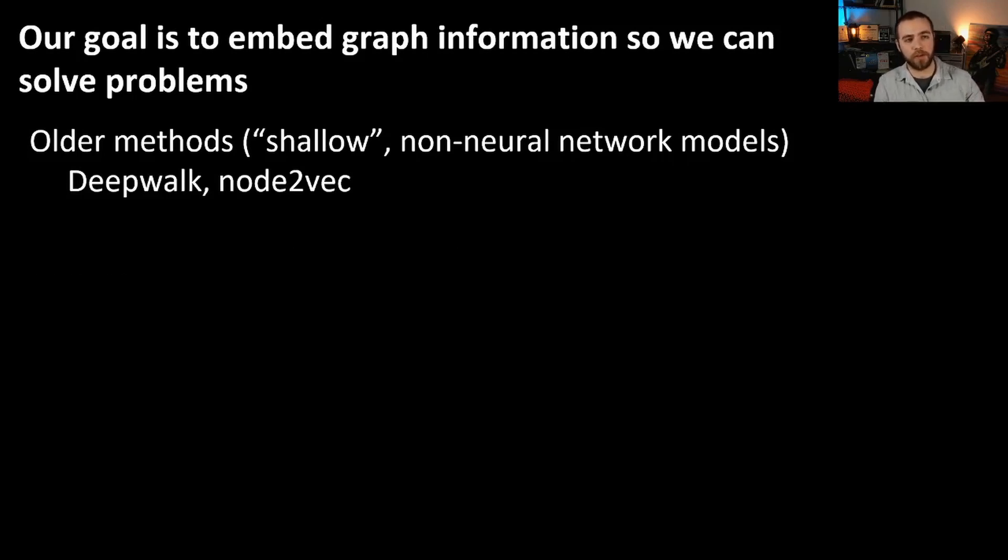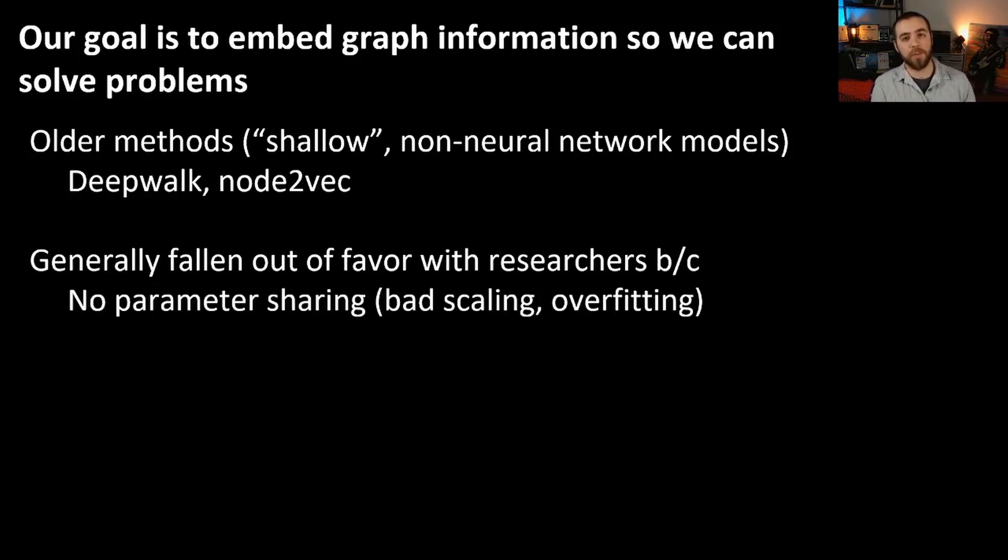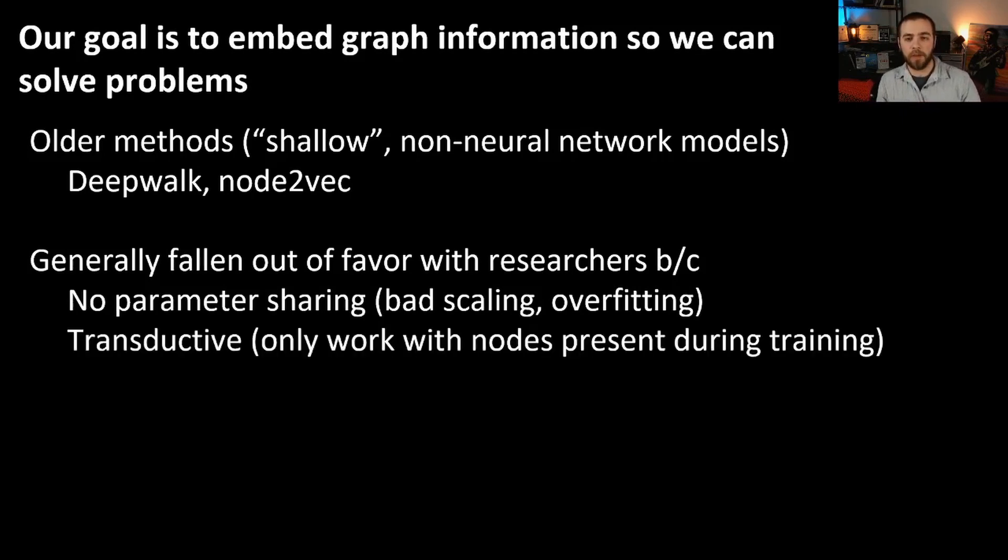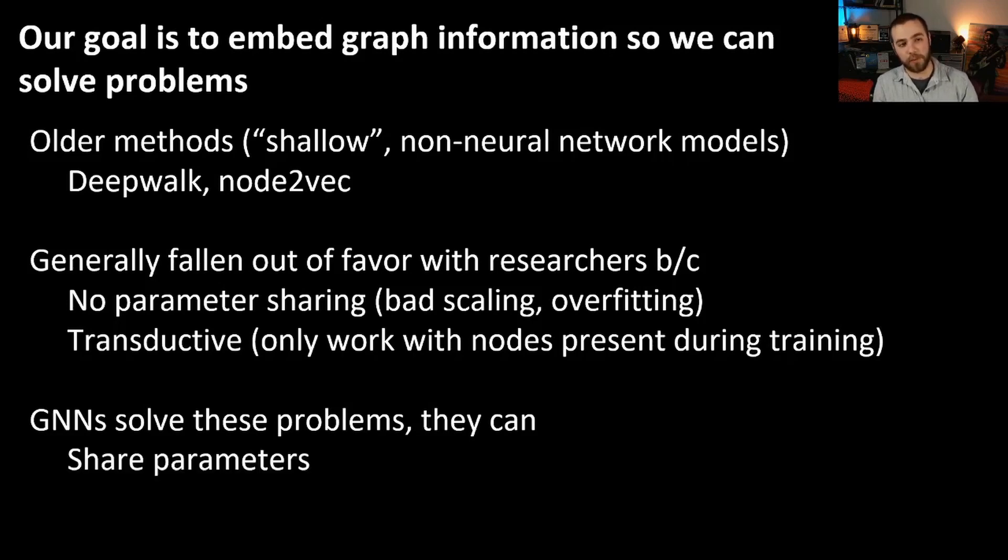Now, older methods, we'll understand these as shallow methods, or non-neural network-based models, did not accomplish this so well. So DeepWalk and Node2Vec, these methods have generally fallen out of favor with researchers for several reasons. So they may not share parameters, they may not scale that well, and they may lead to overfitting as well. And they may only work into the transductive case, where you only have nodes, it only will work on nodes that you see during training. And that's not ideal, obviously, if you want to generalize. Now, GNNs actually solve these problems, which means that they're a very interesting type of algorithm, because they share parameters, and they can generalize to inductive tasks, where you're working on nodes that you did not see in your training sets.